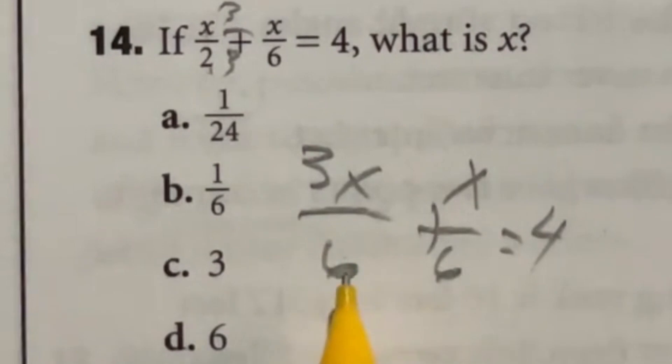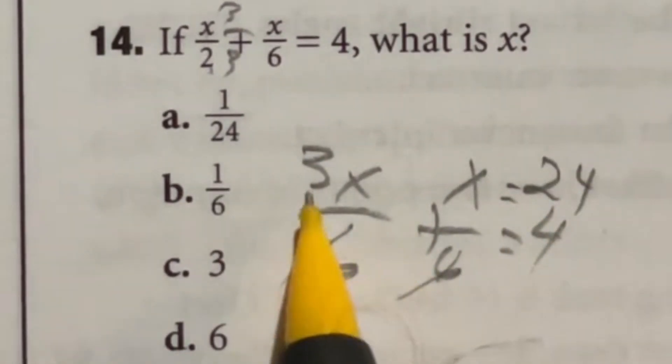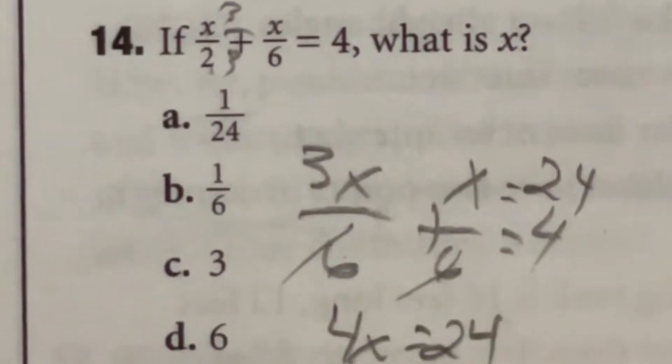Now what happens is we can multiply the whole thing by 6, which is going to give me 3x plus x, because those will cancel out, equals 4 times 6 is going to be 24. Well now I have 3x plus an x, which is going to be 4x equals 24. Divide both sides by 4 there and we get a final answer of 6.